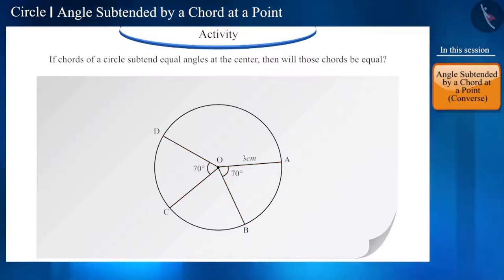Now, join the end points of these two angles AB and CD in this way. Now, we have got chords AB and DC. Find their measurement.